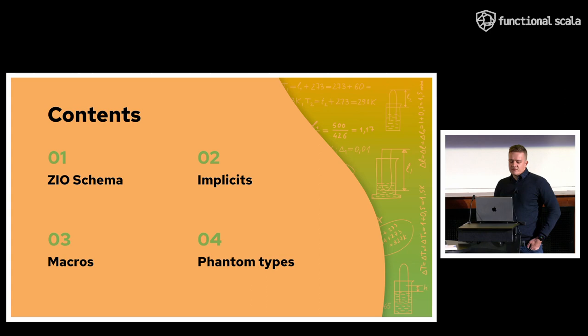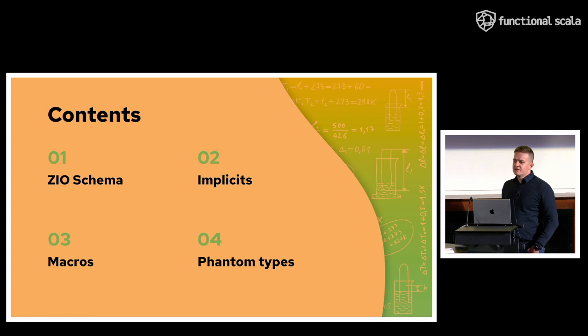So today on the agenda we have a couple of things. We will talk about lower level library ZioSchema, and we will talk about also some language features like implicits, macros, and phantom types. Now I want to emphasize that you don't need to know any of these things in order to use ZioSQL. ZioSQL is a higher level library that's very simple to use and this talk just demonstrates how powerful Scala language is so we can build these higher level libraries on top of this lower level, maybe a little bit more complex, but powerful features.